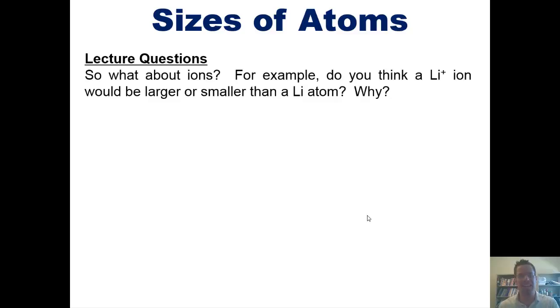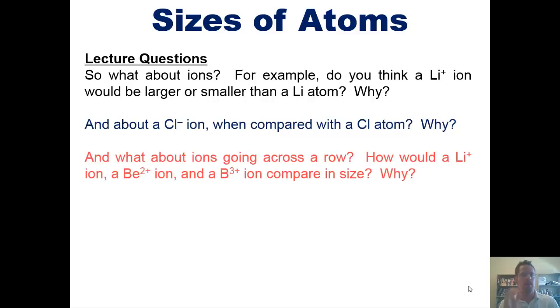For example, do you think a lithium cation would be larger or smaller than a lithium atom? And why? And what about a chloride ion when compared to a neutral chlorine atom? And why? And what about ions going across a row? For example, how would a lithium cation compare to a beryllium 2+ cation and compare to a boron 3+ cation in size? Why?